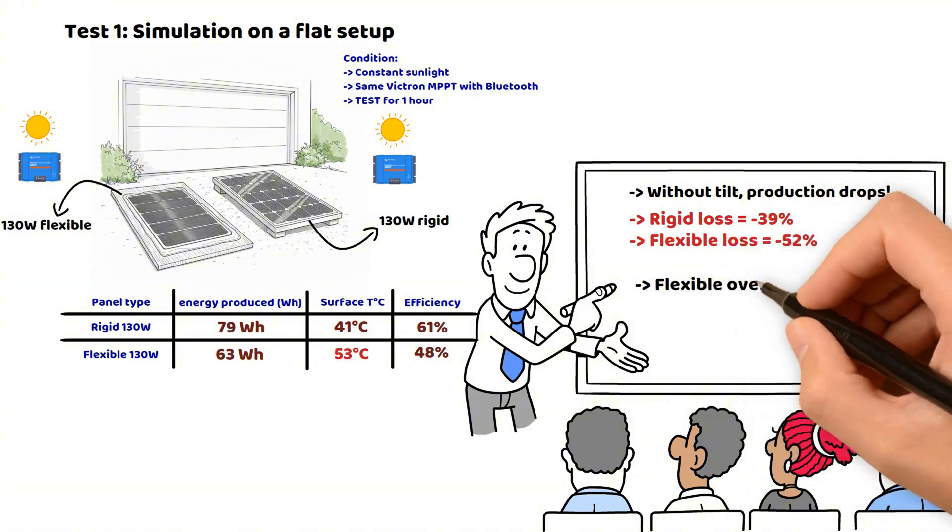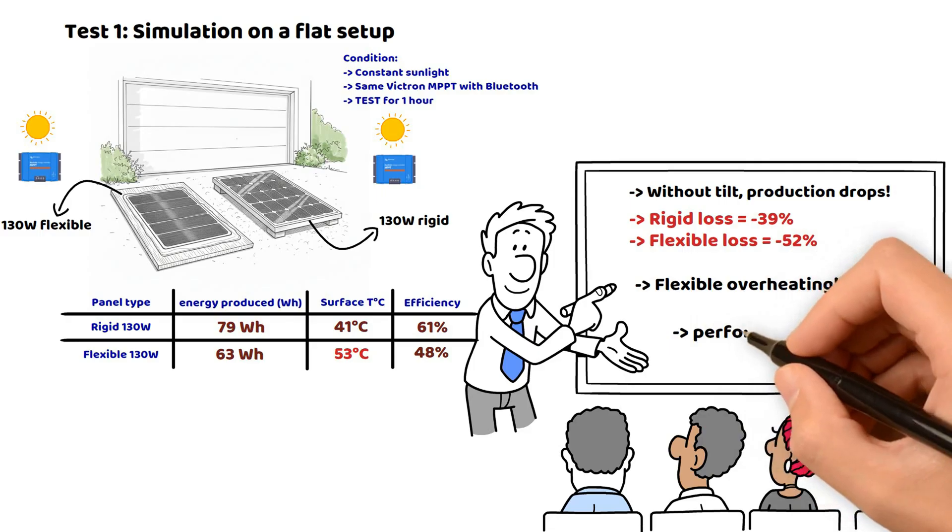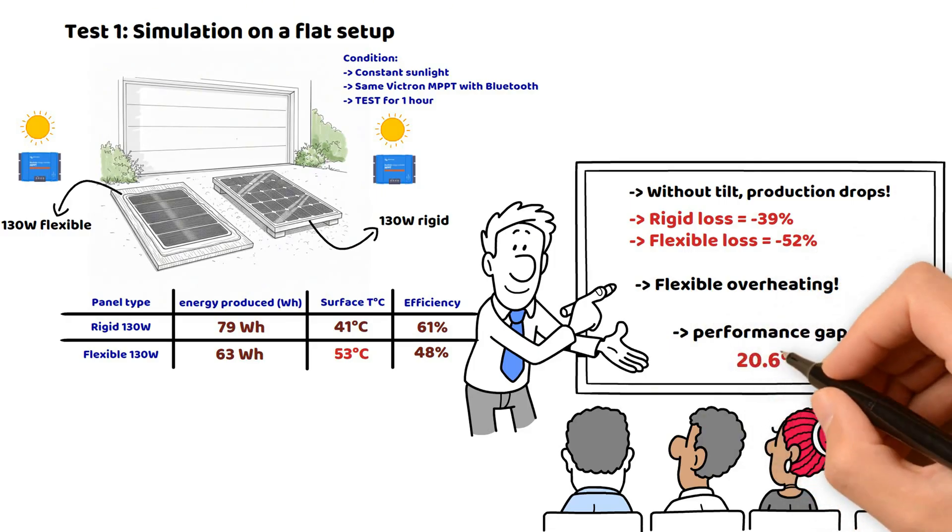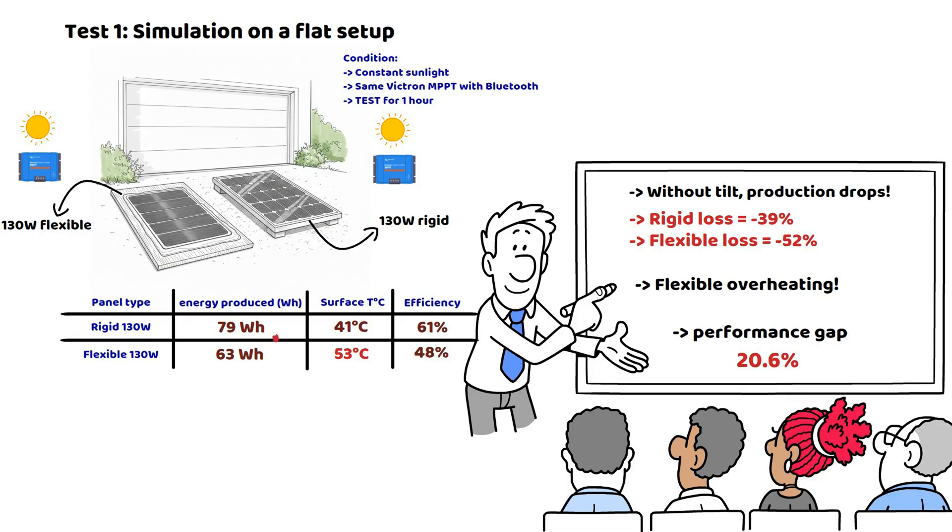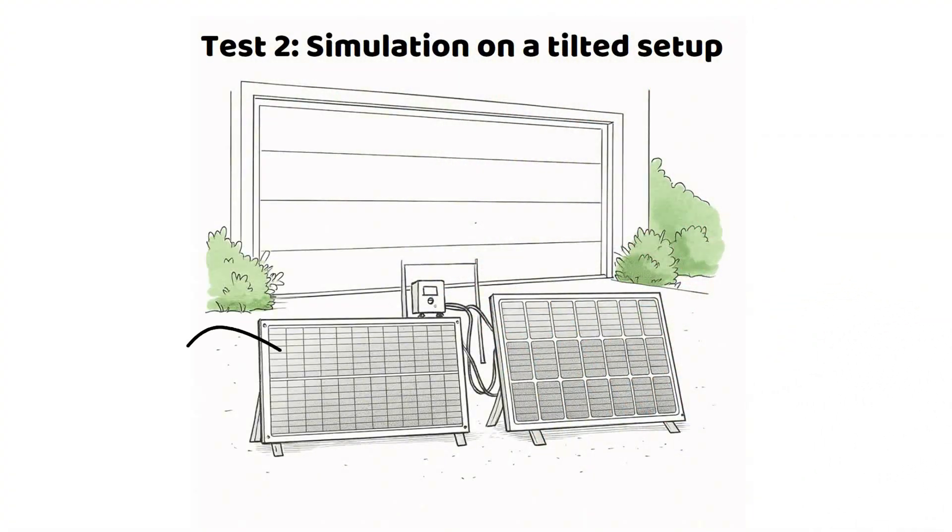And also the plastic nature of the panel, which is less tolerant to heat, but we will come back to that later. So the performance gap gives us here, nearly 20% difference between the two panels, which is quite significant. This confirms what I thought, but we still carried out a second test with the tilted version to see if the gap gets smaller.